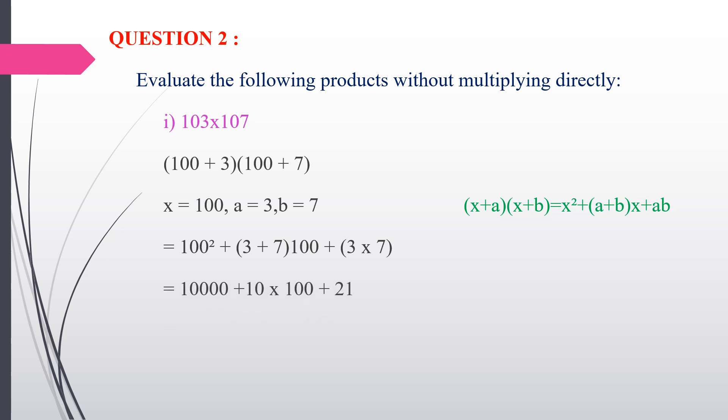Continuing: 10,000 + 10 × 100 + 21 = 10,000 + 1,000 + 21. So the answer is 11,021.